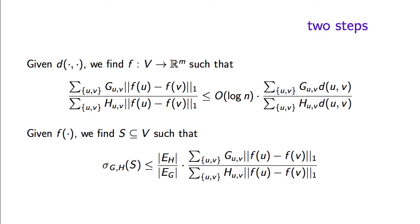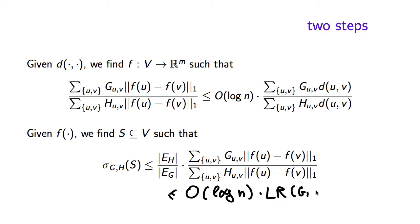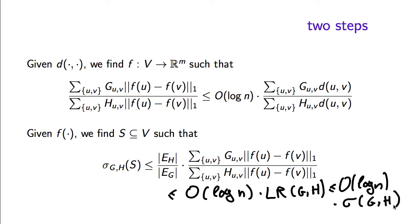Combining those two facts, we get that the sparsity is at most O(log n) times (|E_H| / |E_G|) times the ratio — which is just the cost of d as a solution of the latent row relaxation. For the optimal d, this is times LR(G, H). Since this is a relaxation, it is at most O(log n) times the sparsity of the instance G, H. This gives a polynomial time algorithm that finds a cut whose sparsity is at most O(log n) times the optimal sparsity.